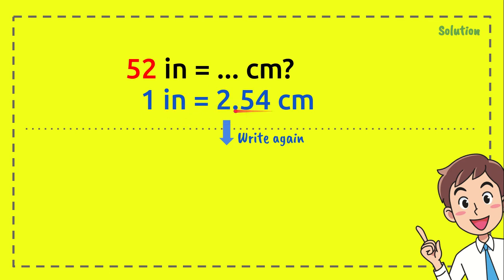You need to write down the formula again, and then we need to connect that formula with this number. So we want to make it equals right? Then we need to put 52 here and here as well.